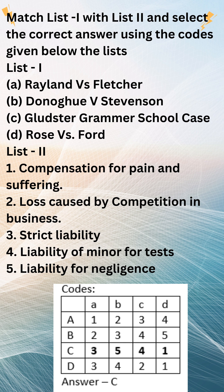Lord Atkin, delivering the leading judgment, held that the damages recoverable under the Law Reform (Miscellaneous Provisions) Act 1934 were to be calculated without reference to any loss or gain to the deceased's estate consequent on their death, except that a sum in respect of funeral expenses could be included. Lord Atkin explained that the purpose of the Act was to ensure that the deceased's estate was compensated for the loss that the deceased had suffered personally, rather than for the loss that the estate had suffered as a result of the deceased's death. He said: 'The estate is not to be put in a better or worse position than the deceased would have been in if he had lived.'